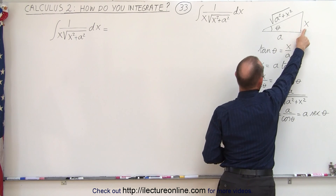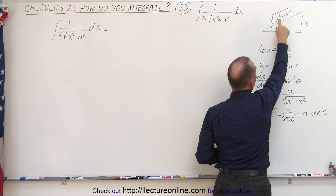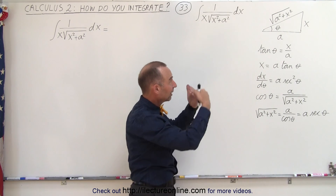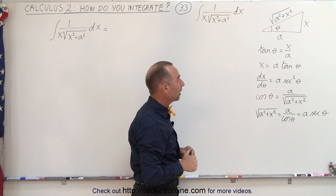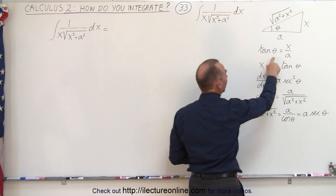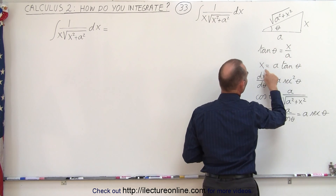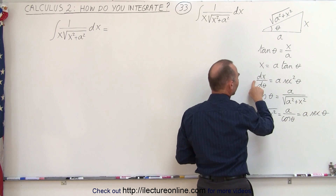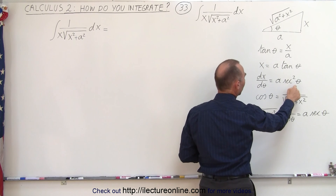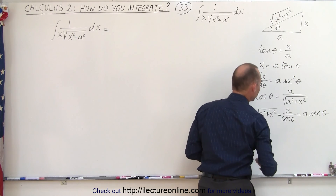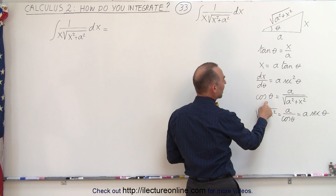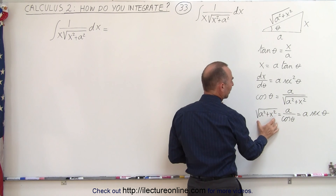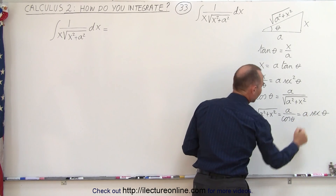Notice we have x on the far side, a on the adjacent side, and the hypotenuse is the square root of a squared plus x squared, because of the plus that needs to go to the hypotenuse. So now we have the tangent of theta defined as x over a. Therefore x is equal to a tangent of theta. The derivative dx/dθ is a secant squared of theta, which is the derivative of the tangent. The cosine of the angle is defined as a over the hypotenuse, which means the hypotenuse is a times the secant of theta.